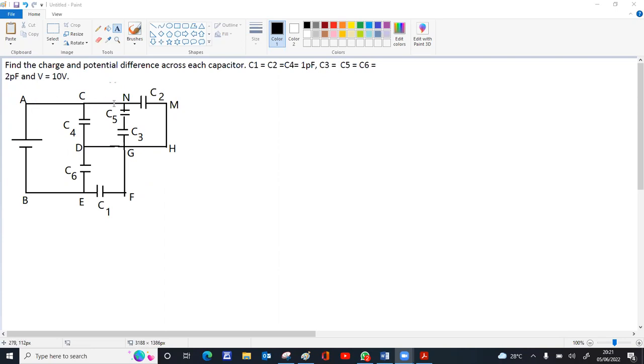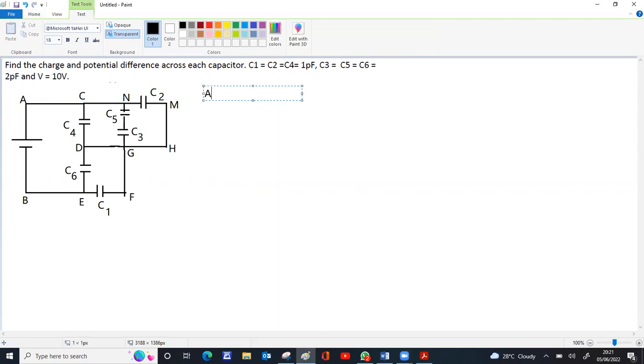Even C and N don't have any connection. So all the three points A, C, N are at same potential. They are single point. You can reduce all the three to one single connection.